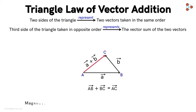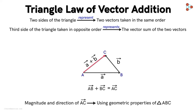Here we can find the magnitude and direction of the vector AC by using geometric properties of the triangle ABC, but it's a little difficult. Hence, we will see another easier method in our upcoming videos. Here, we just need to understand what the addition of vectors means intuitively.